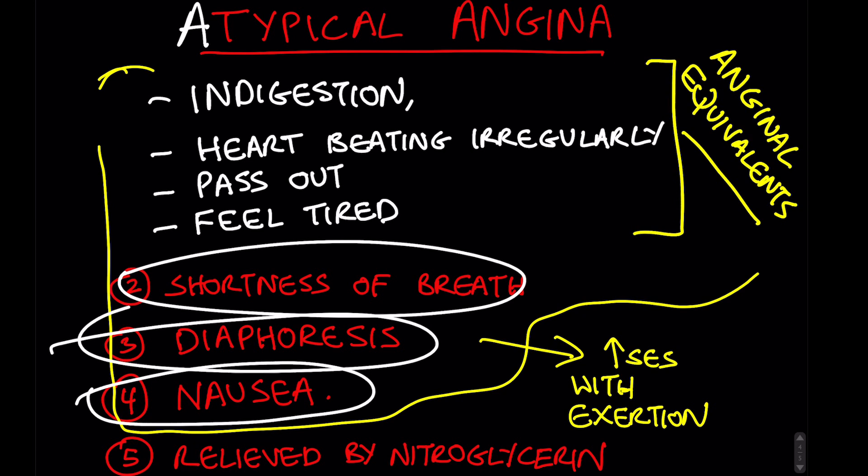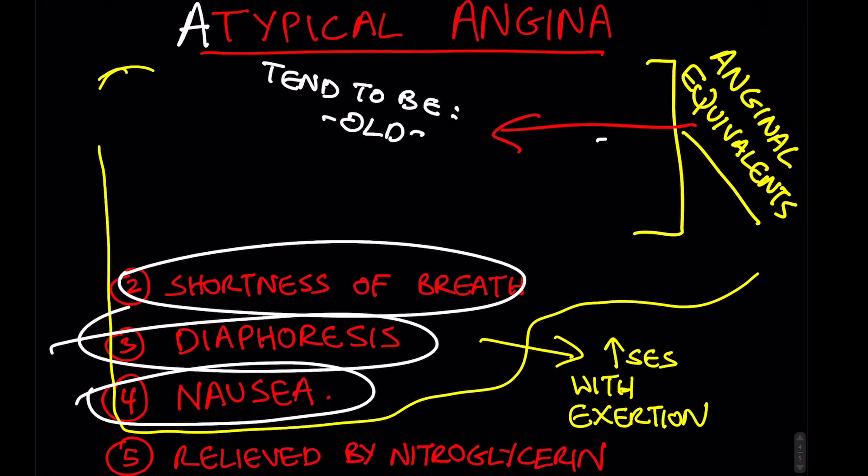How do we know if symptoms like shortness of breath, indigestion, nausea, or fatigue are an anginal equivalent? The short answer is that we don't know — it's only when the patient presents to a physician and a test confirms the angina or heart attack that we know. In other words, it's only retrospectively that we realize the symptoms were caused by a heart attack. Typically, patients with heart disease that manifests as anginal equivalents rather than angina tend to be older, diabetic, and also tend to be women.